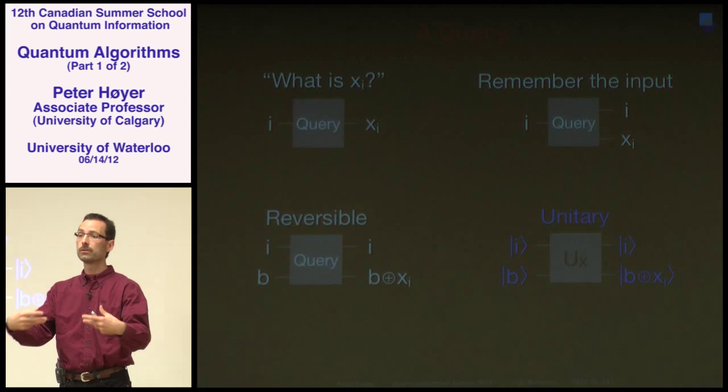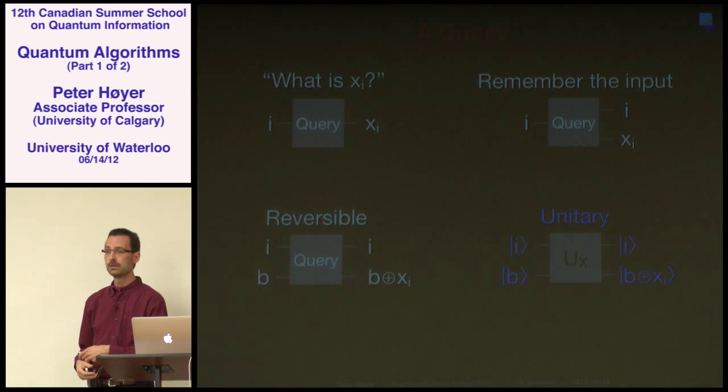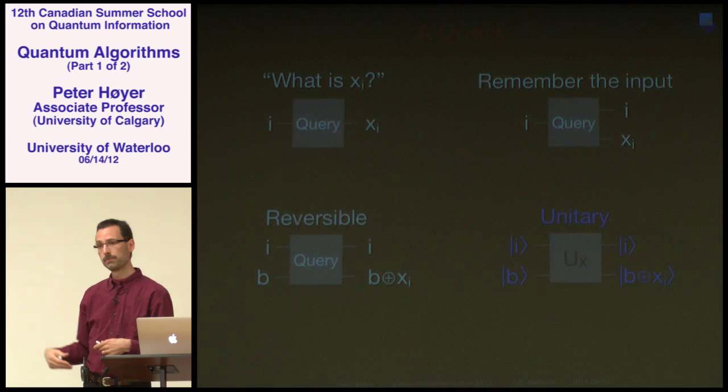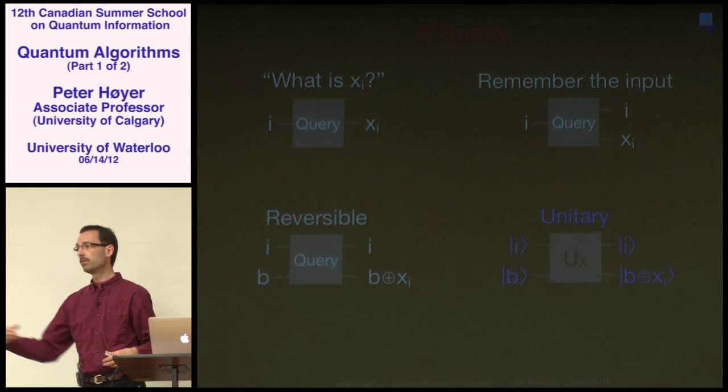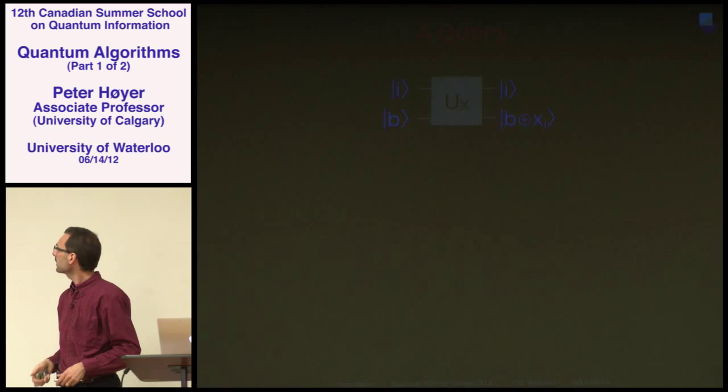By putting kets around these operators, we can ask these questions in superposition — giving us a unitary operator, specifically a permutation matrix. This is how we model queries on a quantum computer. It's very important to get the model right; if you don't have a reasonable model, everything you study within that model doesn't really make sense.